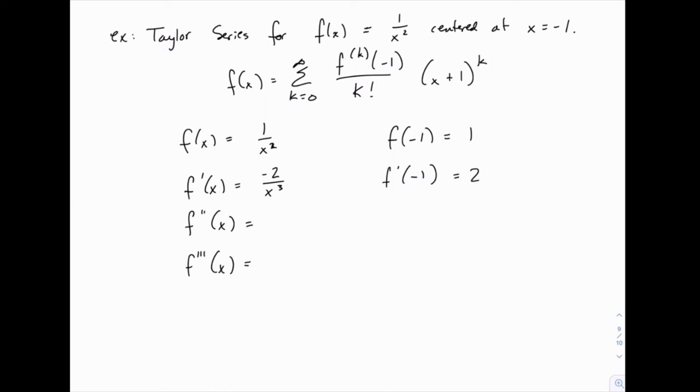The second derivative will be 3 times 2, which we could simplify as 6, but it's easier to see the pattern if we don't simplify, divided by x^4. So when we plug in -1 to that second derivative, the denominator is positive 1, so we just get 3 times 2.